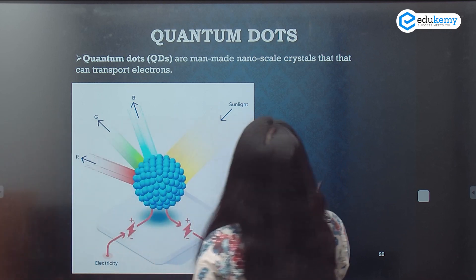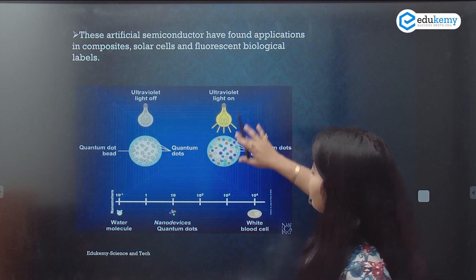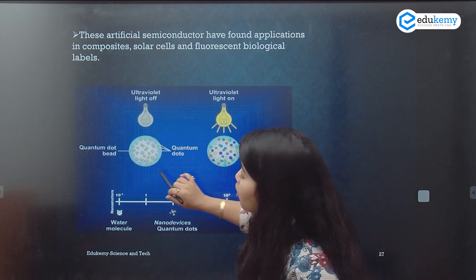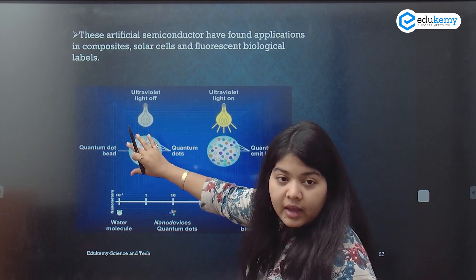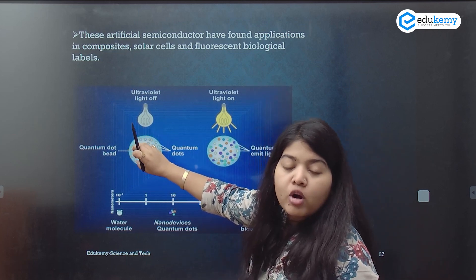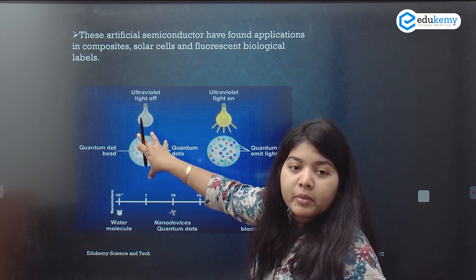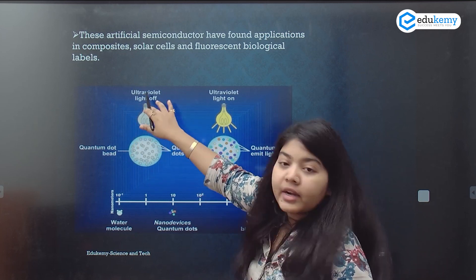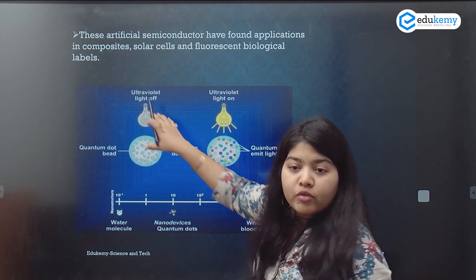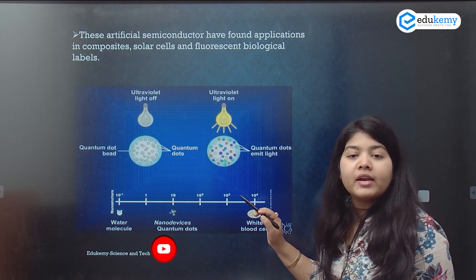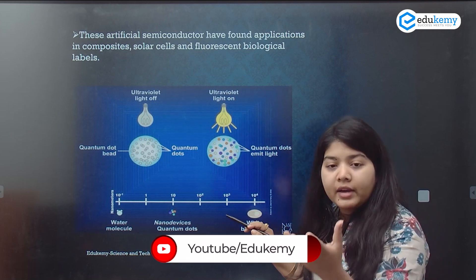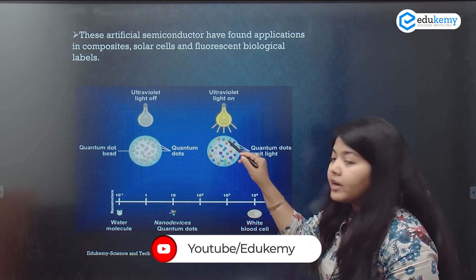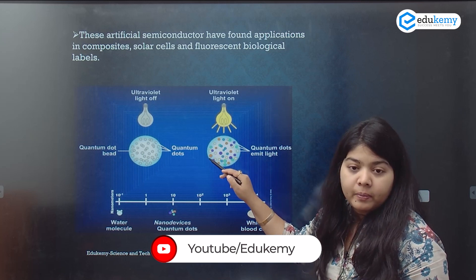It is used for illumination. For example, if this particular thing has quantum dot beads, when ultraviolet light is turned off nothing happens, but the moment you turn on ultraviolet light, it starts illuminating.